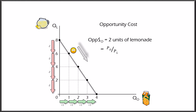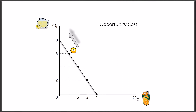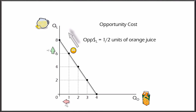Note that the opportunity cost of one product is not in terms of money — it is in relation to the other product. We call this comparative analysis, which is used very often in economics. The inverse is true for the opportunity cost of lemonade: to consume two more units of lemonade, the individual would sacrifice one unit of orange juice. If it were possible to buy half a unit of orange juice, consuming one more unit of lemonade would cost half a unit of orange juice. The opportunity cost of one unit of lemonade equals half a unit of orange juice, which is equal to the price of lemonade divided by the price of orange juice — the inverse of the slope of this line.